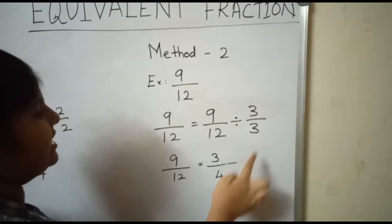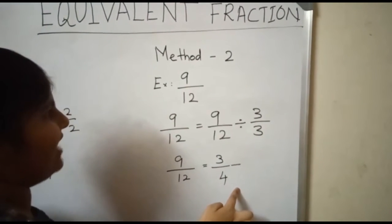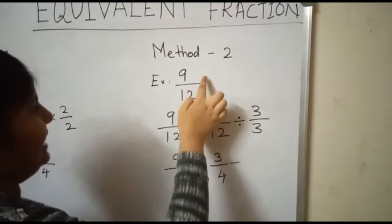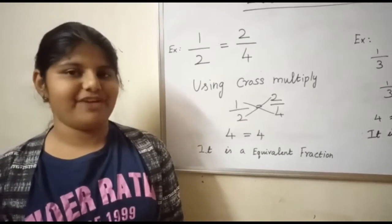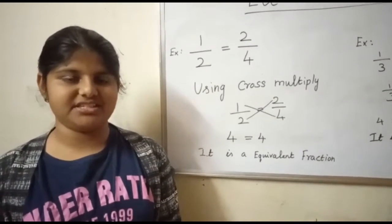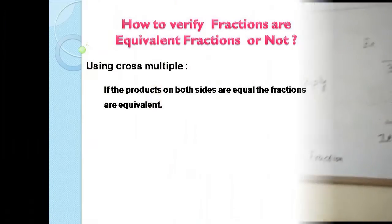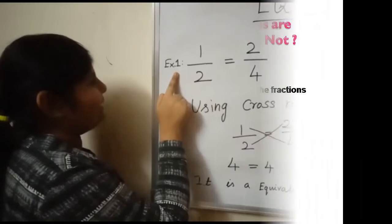So 3/7 is the equivalent fraction of 9/21. Now, how to verify whether fractions are equivalent fractions or not — using cross multiplication. If the products on both sides are equal, the fractions are equivalent.